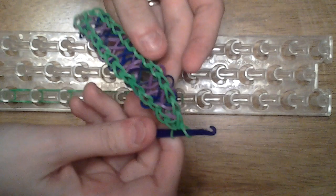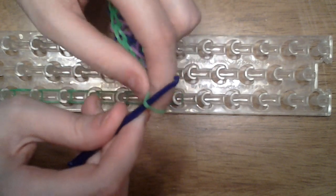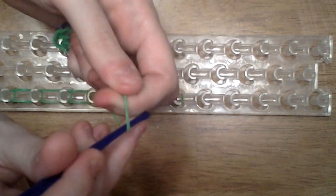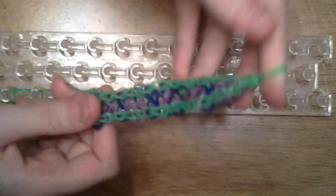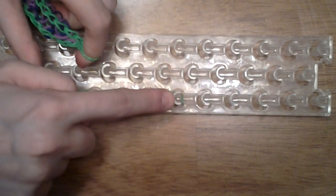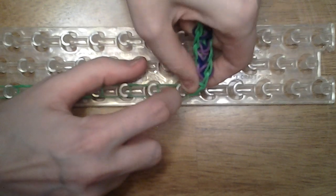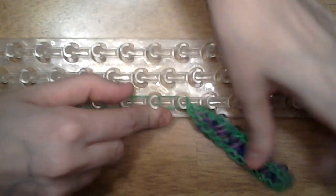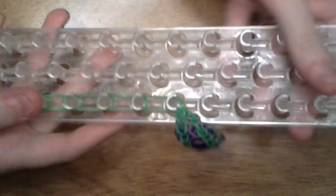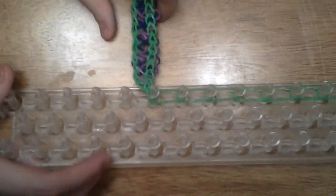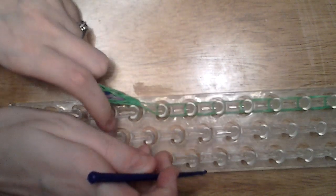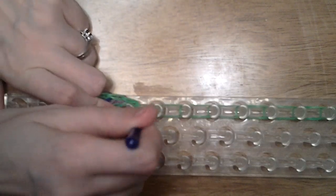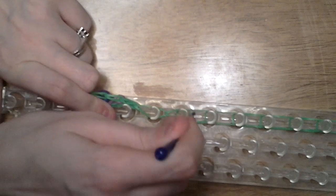Now, once you have all of your bands placed, you're going to carefully remove this band from your tool. I like to place it upon my fingers so that it's less likely to slip off. Now, you're going to place this band on this peg where you ended your extension. Alright, now I'm going to take the loom and turn it around again and I'm going to loop these bands together just like we did for our border bands, just loop them forward.